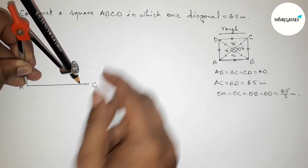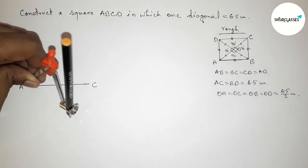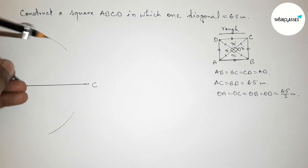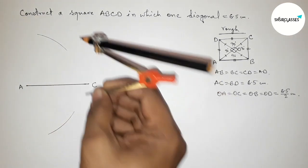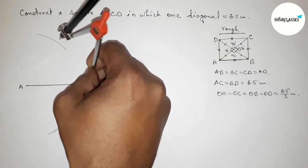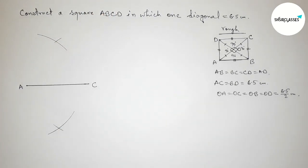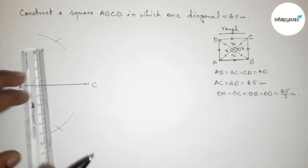Taking greater than half of AC and drawing an arc here and drawing an arc here. Again with same length, putting the compass on the point C and cut here and cut here.